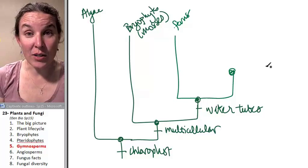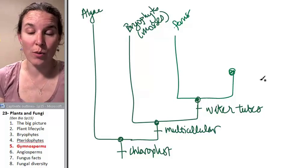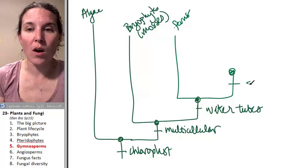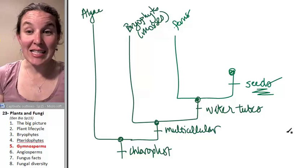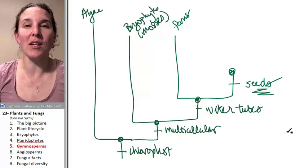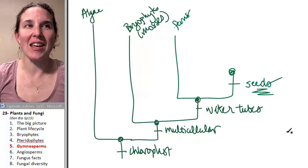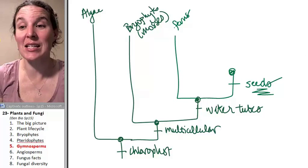The next characteristic is like, you thought water tubes were cool. No. So the next one, dog pounds, seeds. Seeds are without a doubt the most unbelievable invention that came along in plant land. This is phenomenal.